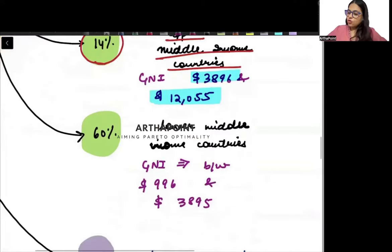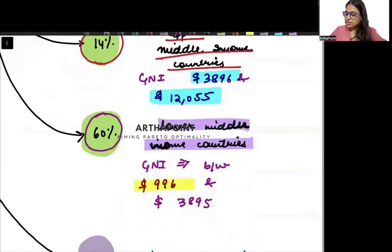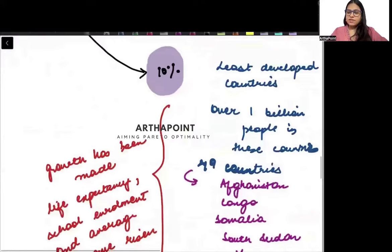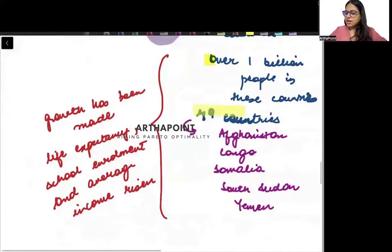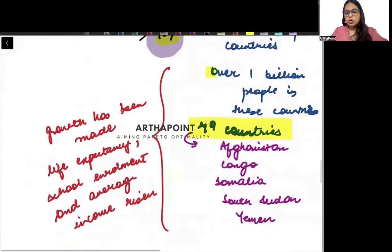Then we have lower middle income countries, where the majority of people live. Their GNI per capita is between $996 and $3,895. And ultimately, we have the lowest or least developed countries where 10% of the people are living — 49 countries have been classified in this lowest income group, including Afghanistan, Congo, South Sudan, Yemen, and others.